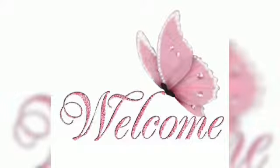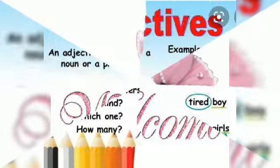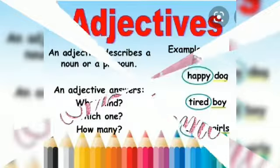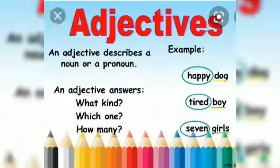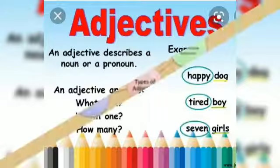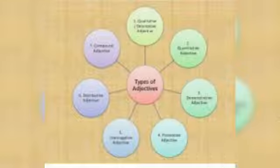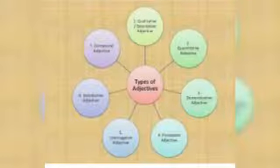Hello and welcome back to online English class. In my previous video, I told you about the adjective. An adjective is a word which describes a noun and a pronoun. There are 7 types of the adjective.